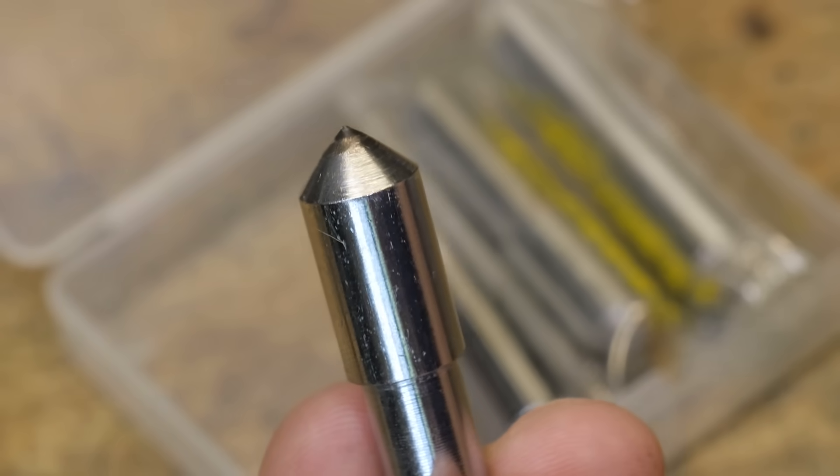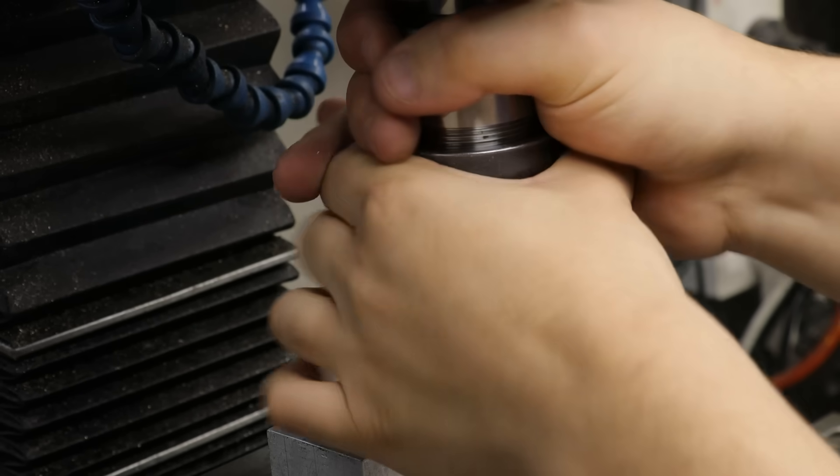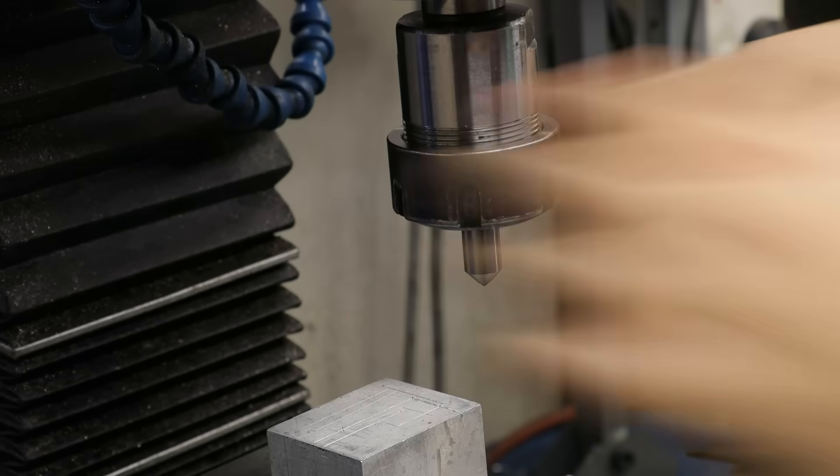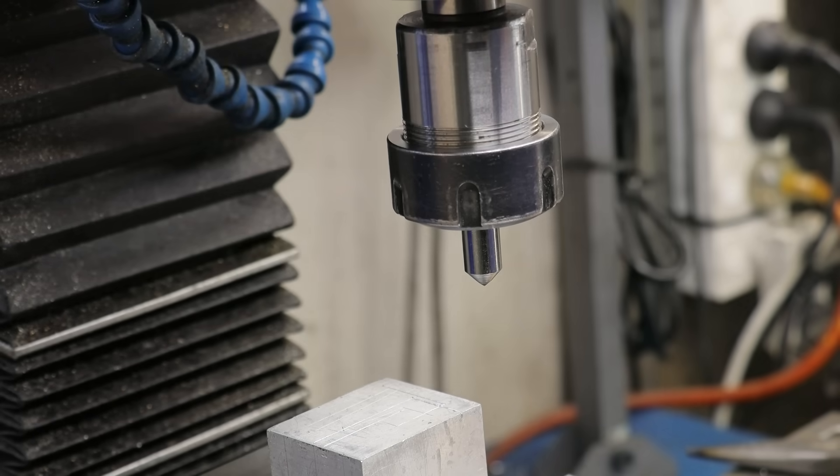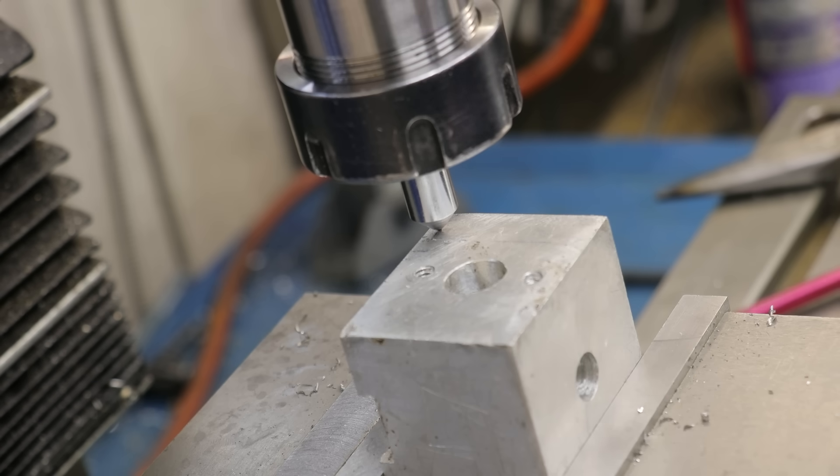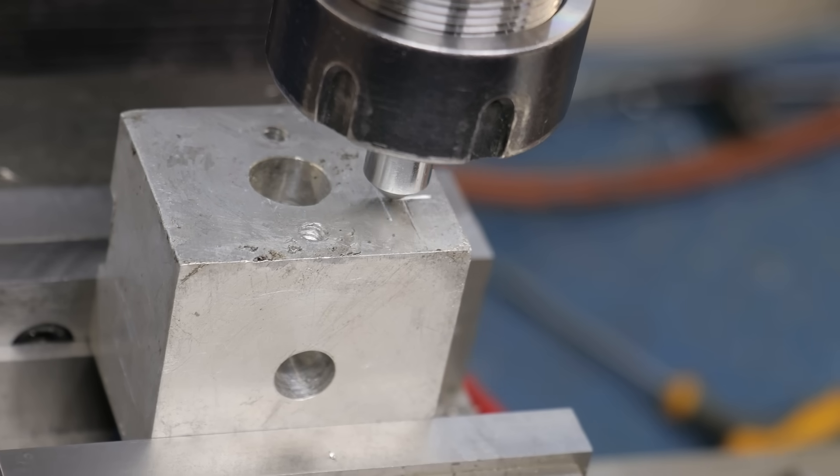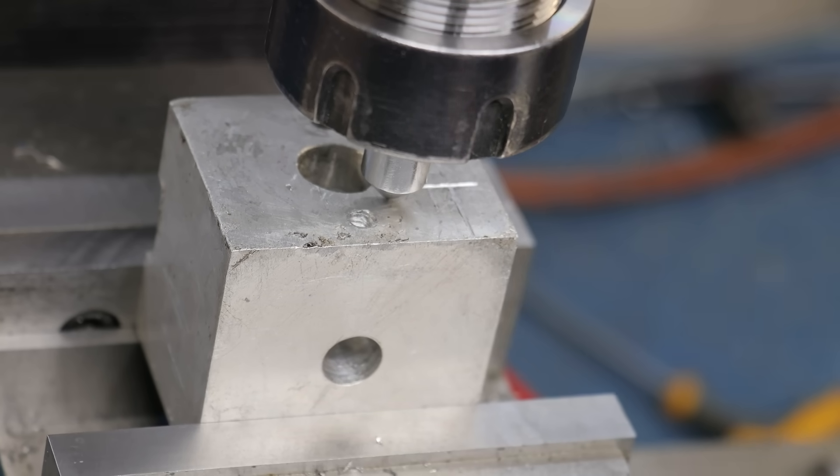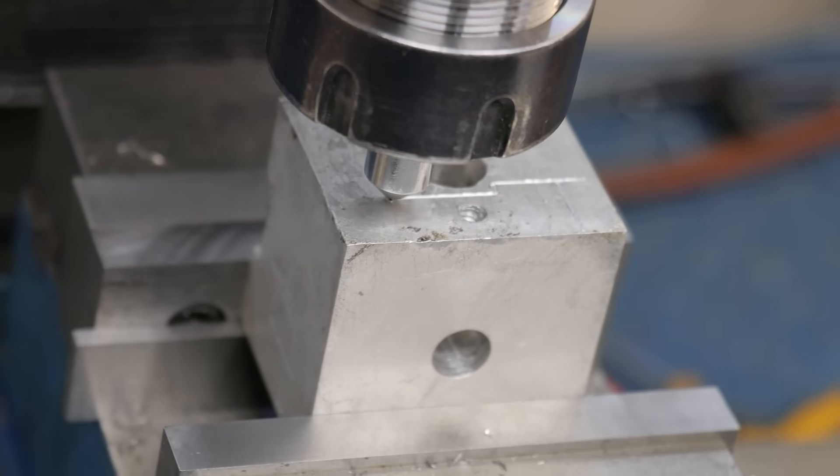So first of all, let's just see if it actually cuts. There's no point in doing all of this if the diamond simply pops out the first time I cut with it, and let's see if I can get away with holding it in an ER collet. So this is just a quick test in aluminum, and you know what? It's actually working quite well.